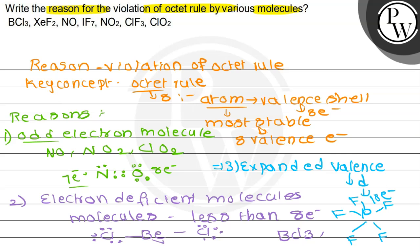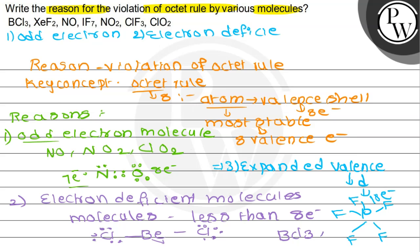These are the 3 reasons for the violation of octet rule by various molecules. First: odd electron molecules. Second: electron deficient molecules. Third: expanded valency molecules. Hope you understood well. Best of luck. Thank you so much.